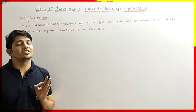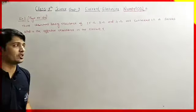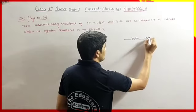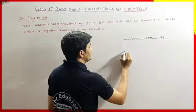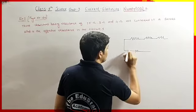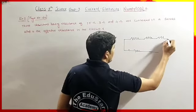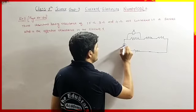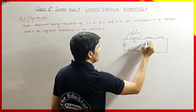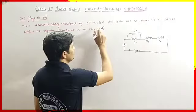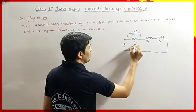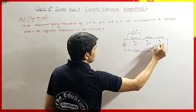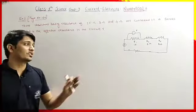When three resistors are connected in series, we have resistor R1, R2, and R3 connected in a circuit. There is a battery, a voltmeter to measure potential difference, and an ammeter in the circuit. R1 is 15 ohm, R2 is 3 ohm, and R3 is 4 ohm.